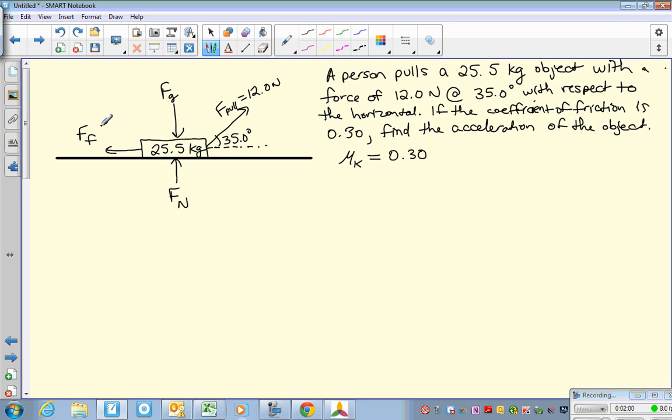So now the very first step when you're doing any of these problems should be to find the gravitational force, which Fg is just mass times the acceleration due to gravity. So take that 25.5 multiplied by negative 9.81. Both have three significant figures, so our answer should have three. 25.5 times negative 9.81 is negative 250.155, but that rounds to negative 250.